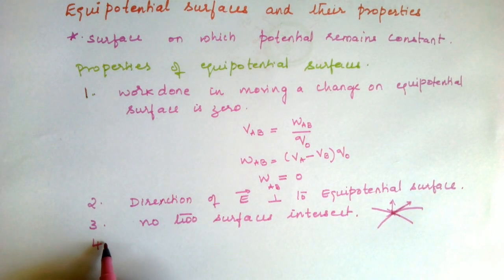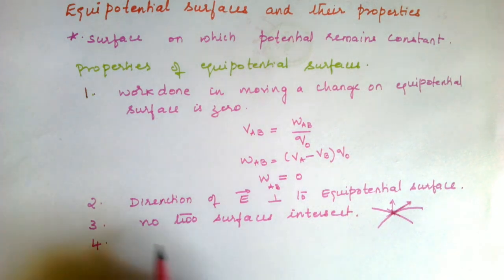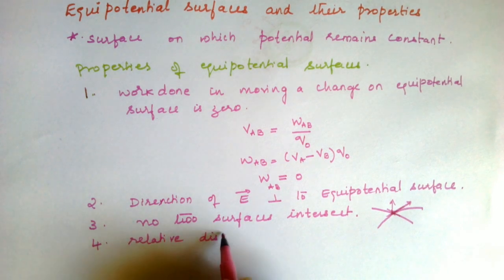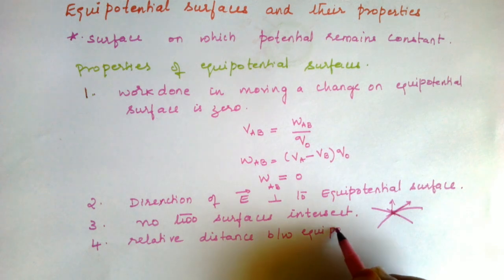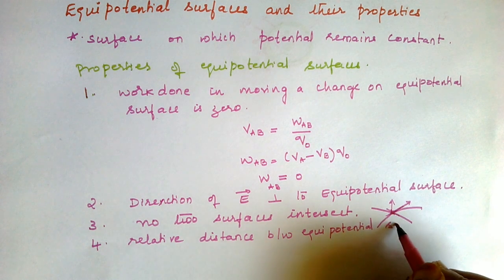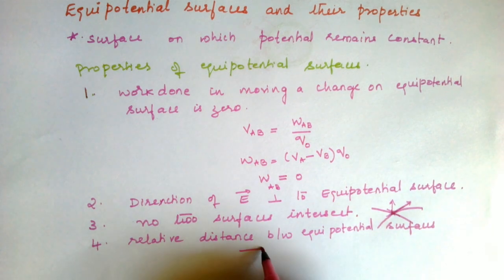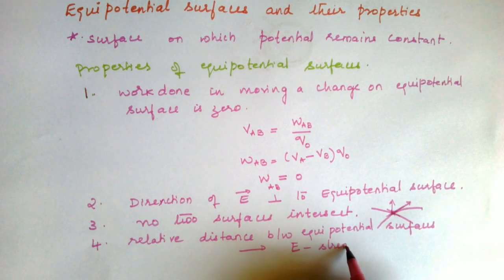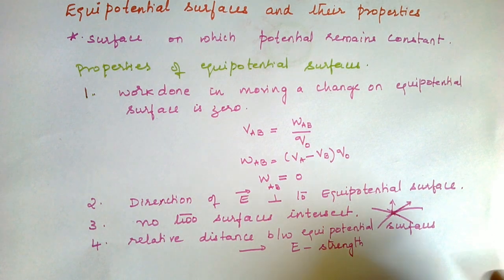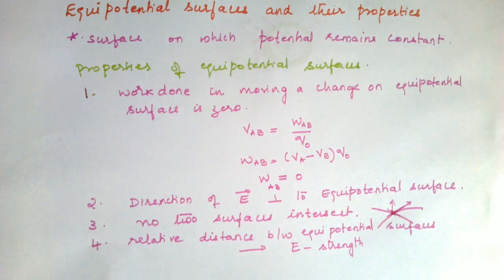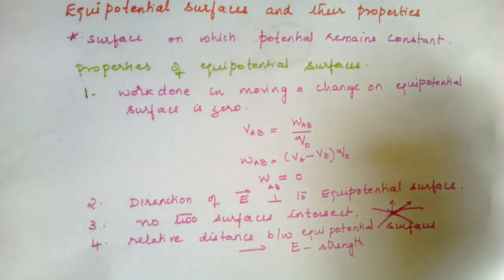The fourth property: the relative distance between equipotential surfaces is a measure of the strength of the electric field. If two equipotential surfaces are closely placed — small distance — the field is stronger. If the distance between the surfaces is larger, the field is weaker.